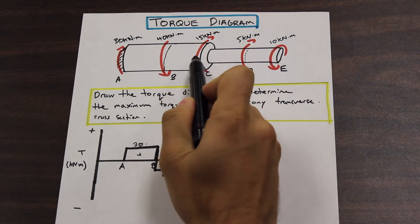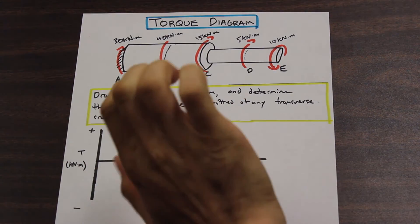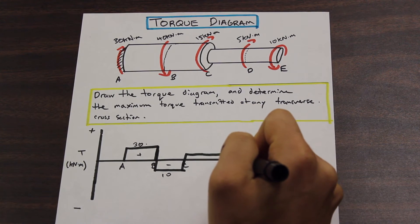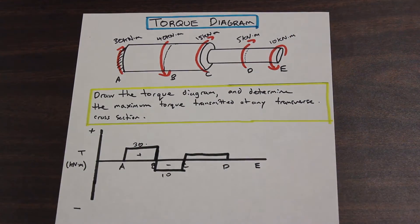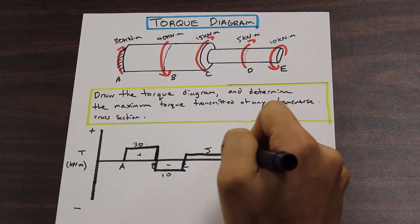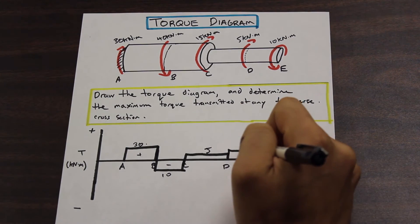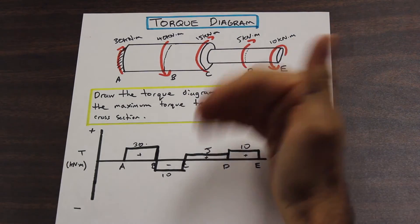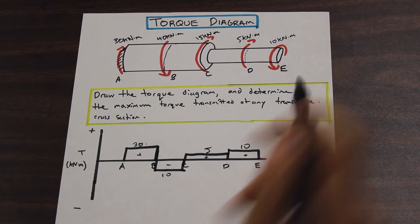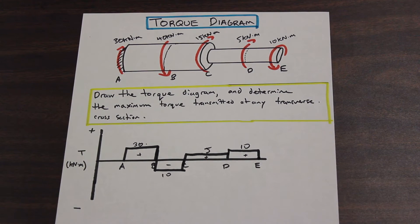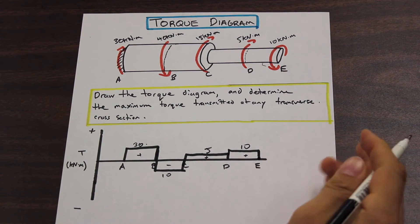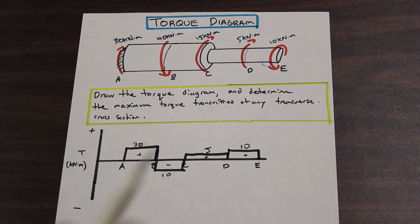Between B and C we're at negative 10. When we get to C, we have 15 kilonewton meters in the clockwise positive direction, so we add 15 to negative 10, giving us positive 5, and that continues until we get to point D. At point D we have a positive torque of 5, so we go up to 10. Finally, arriving at 10, we have a negative 10 torque at E, and that brings us back to zero.